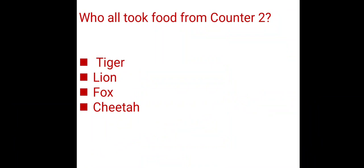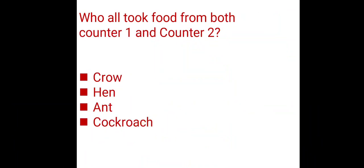Let's look at counter two animals. Tiger, lion, fox, cheetah — they eat only animal food. They eat only from counter two.